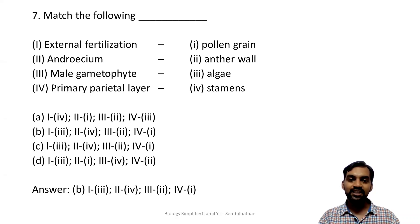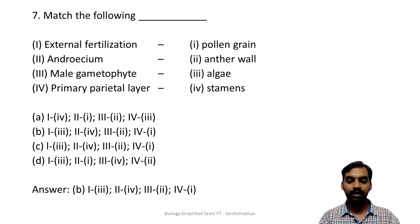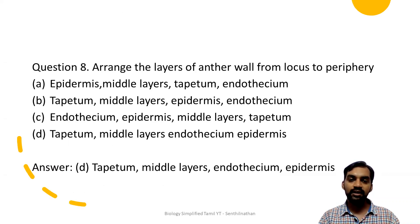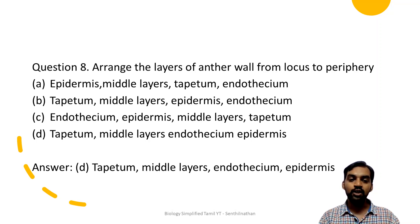Next, arrange the layers of anther wall from loculus to periphery. The loculus is the pollen sac - in the anther, the pollen sac is the loculus, which is the space containing pollen grains. From inside to outside, the correct order is option D: tapetum, middle layers, endothecium, epidermis. This is the correct order from inside to outside.